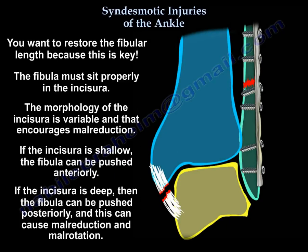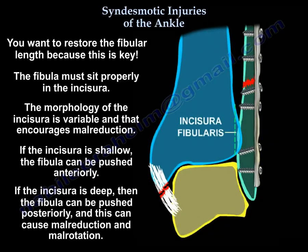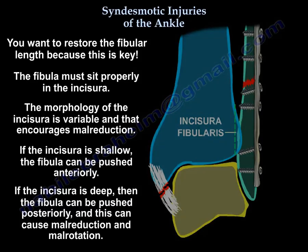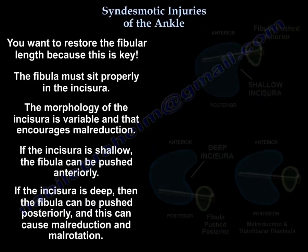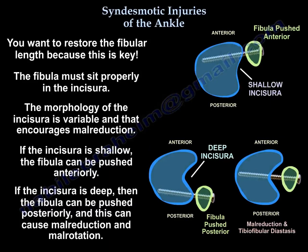The fibula must sit properly in the incisura. The morphology of the incisura is variable and that encourages mal-reduction. If the incisura is shallow, the fibula can be pushed anteriorly; if it is deep, it can be pushed posteriorly. That can cause mal-reduction and mal-rotation.